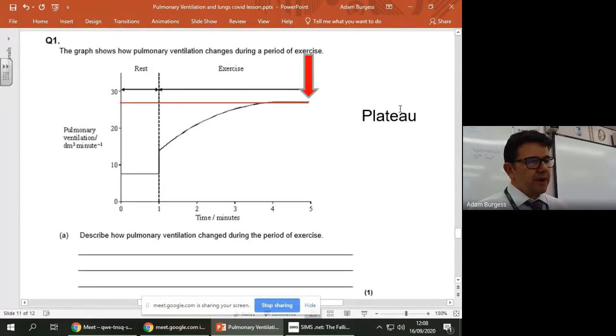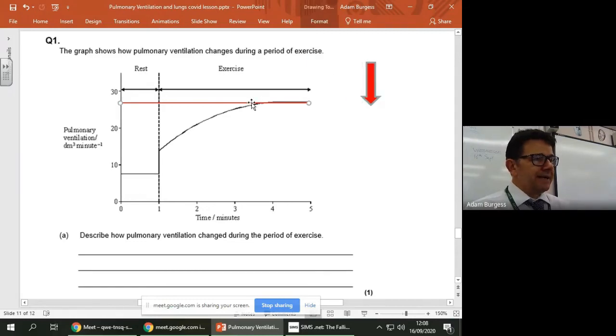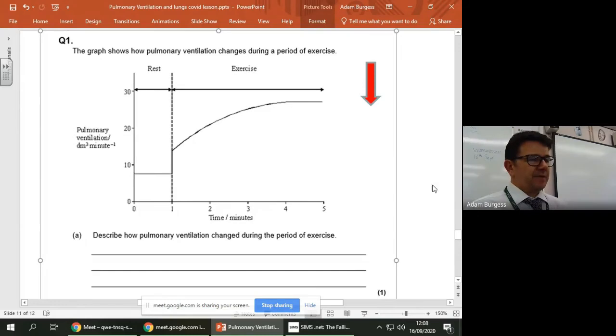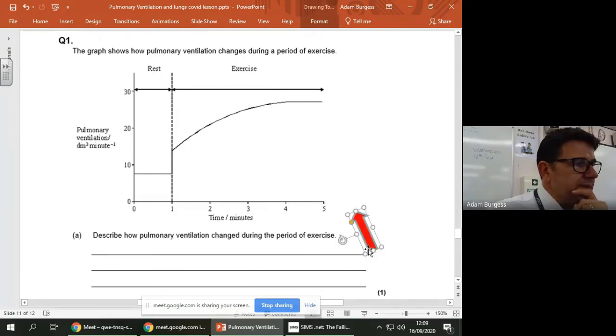Okay, so I'll just make it bigger so you can see it. So this is a different type of graph. Okay, get rid of that. I'll get rid of that as well. So this is a different type of graph. So the first, so it shows how pulmonary ventilation changes during a period of exercise.